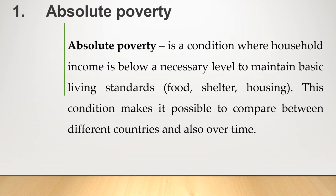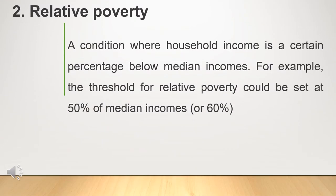The threshold at which absolute poverty is defined is always about the same, independent of the person's permanent location or era. Relative poverty is the condition where household income is a certain percentage below the median income. For example, the threshold for relative poverty could be set at 50% of median income. Relative poverty occurs when a person cannot meet a minimum level of living standard compared to others in the same time and place. The threshold at which relative poverty is defined varies from one country to another and from one society to another.